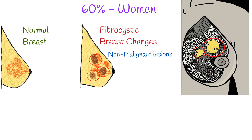Fibrocystic breast is most commonly described as painful breast, and the pain is correlated with the menstrual cycle. There is more pain before menstruation, and the pain goes away or minimizes after menstruation. The breasts may be described as lumpy or doughy.